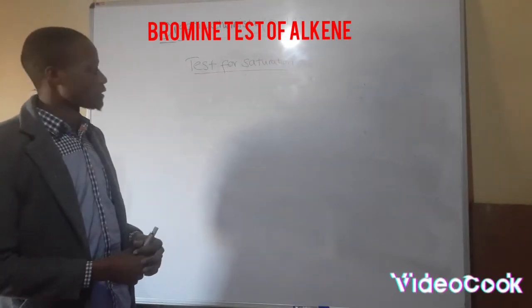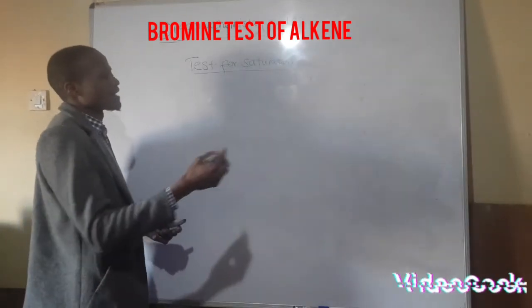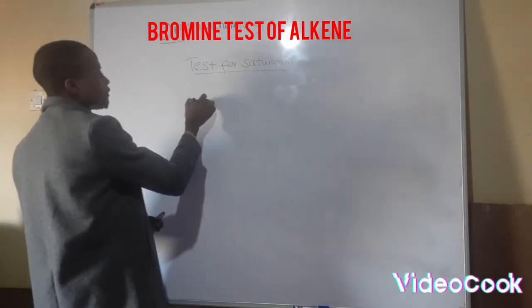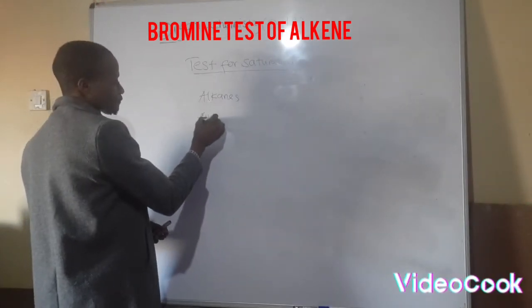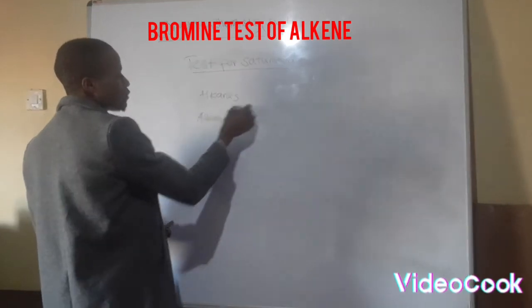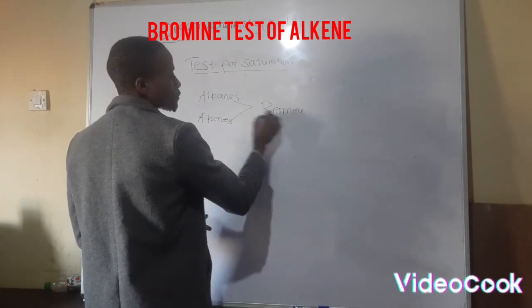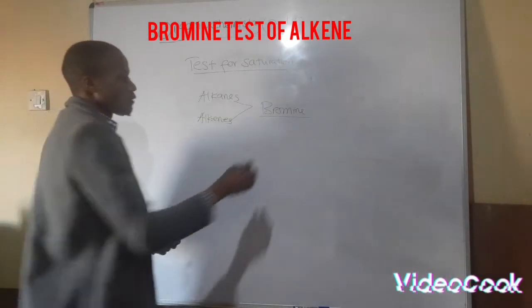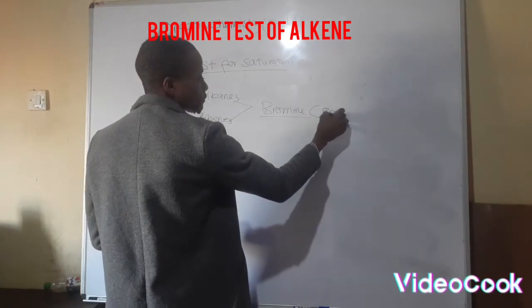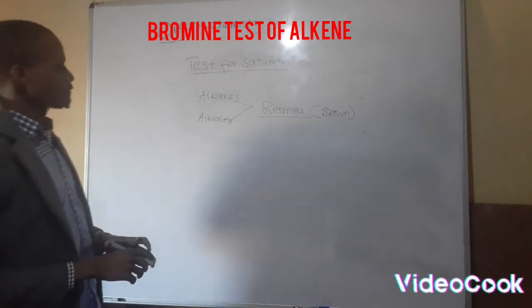The test for alkenes or alkanes can be called the test for saturation. When testing these two — alkenes and alkanes — we use what is called the bromine test. We test for saturation by using bromine. The color of bromine is brown.